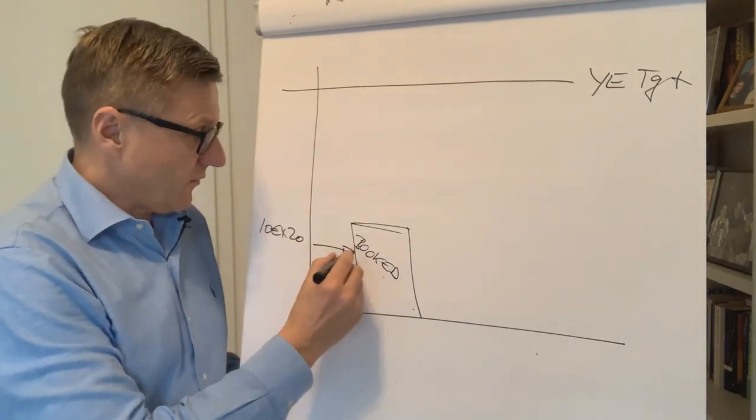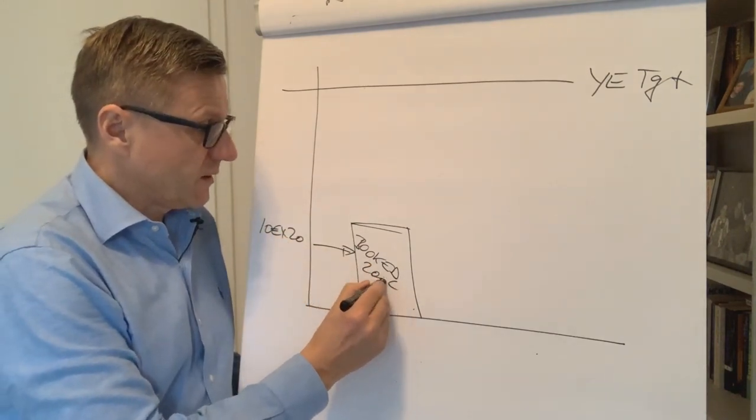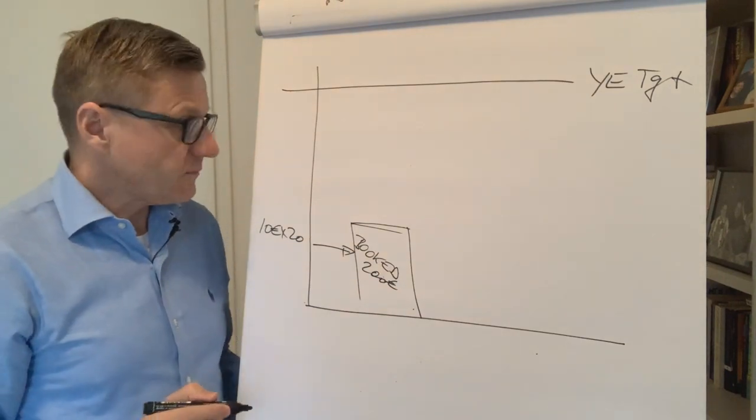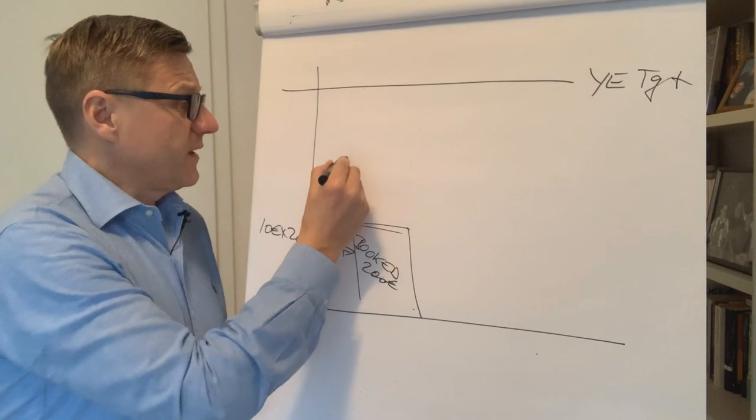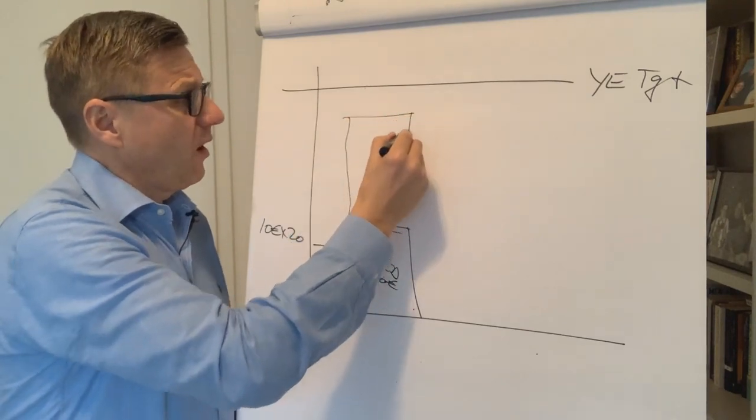If you have very simple terms, if you have a product that costs 10 euros and you've sold 20 of those, you have actually booked 200 euros here.